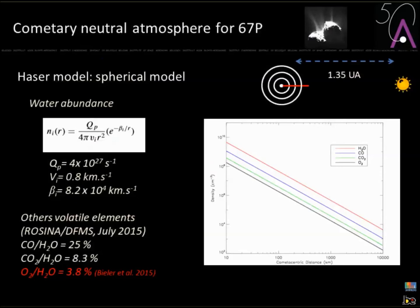We apply this to comet 67P, visited by Rosetta. You need a neutral atmosphere model first. We use data from the DFMS instrument of the ROSINA suite on board Rosetta, with Kathrin Altwegg as PI. This gives an estimate of volatile abundances relative to water — CO, CO2, and notably, also molecular oxygen, which was surprisingly detected within the cometary atmosphere and must be included in the model.